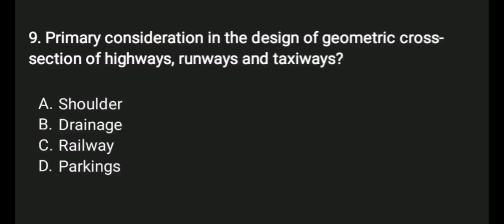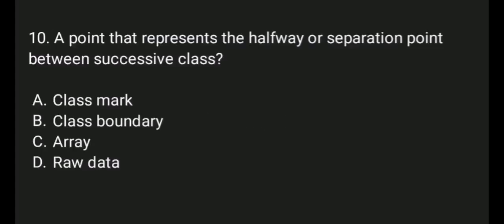9. Primary consideration in the design of geometric cross section of highways, runways, and taxiways. A. Shoulder, B. Drainage, C. Railway, D. Parkings. Answer: B. Drainage.